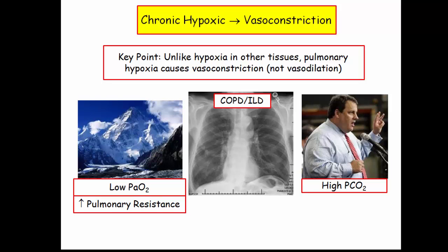Severe obstructive sleep apnea can also raise pressures. The mechanism is hypoventilation — the PCO2 rises while the PaO2 decreases. This change occurs roughly in direct proportion. Be prepared to see sleep apnea questions that describe chronic hypoxia and elevated pulmonary artery pressure.